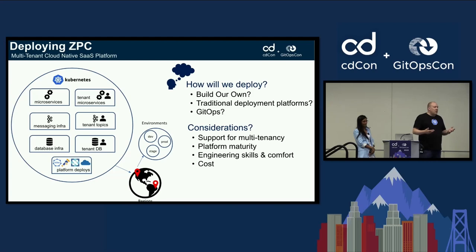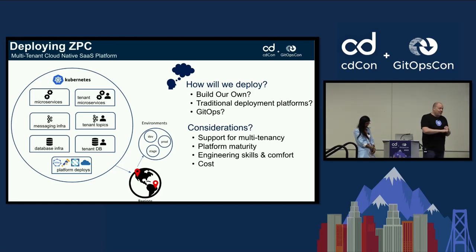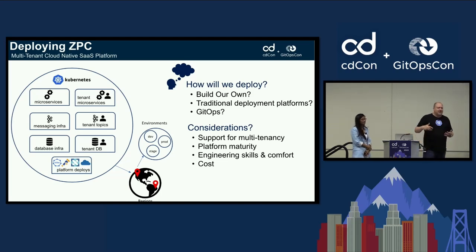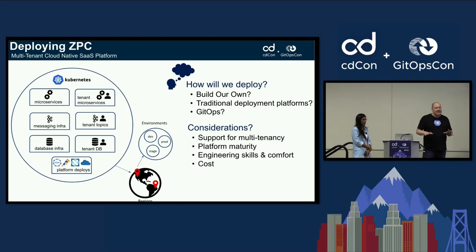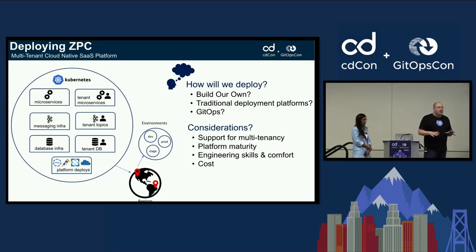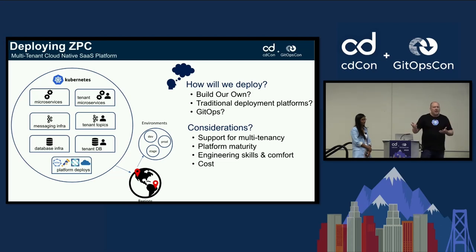When we started thinking about how to approach this — remember, we're greenfield — we started making decisions around do we want to build our own, or are we that special? Everybody thinks they're special. Do we build this ourselves? Do we use a traditional deployment platform like GitHub Actions or Azure DevOps? Or do we embrace a GitOps approach, since GitOps and cloud-native go hand in hand? We had strong considerations: we needed to support our special multi-tenancy use cases — tenant of tenants — and we were sensitive to not getting too early on new platforms because we wanted something with maturity and long life. It was very important that our engineers were comfortable with the platform, because a key consideration was velocity — if we introduced something really new to our engineers, it would slow us down and we wouldn't meet our deployment goals. And obviously cost was a determining factor.